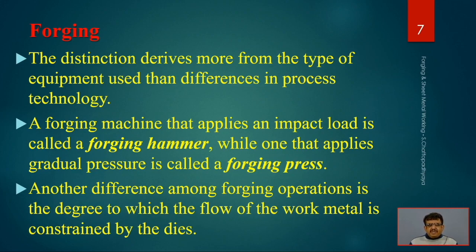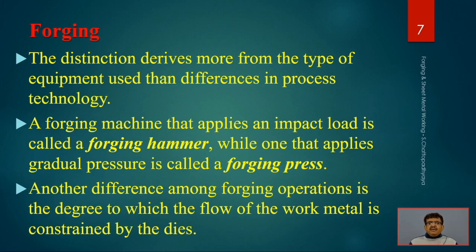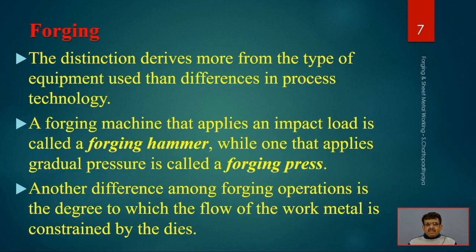Another difference among forging operations is the degree to which the flow of work material is constrained by the die. The material has to flow through all corners, nooks, and corners of the die so that complex and complicated geometrics can be achieved. Die design is important - what kind of material, what force, what velocity - all these are complex calculations. Once a correct die is designed and process parameters are known, the die is ready for mass production, so people do a lot of experimentation to achieve perfection.